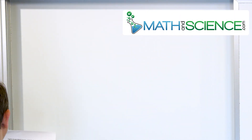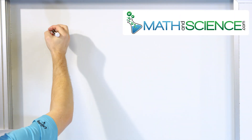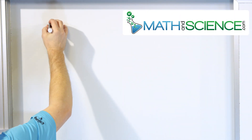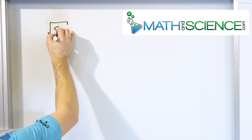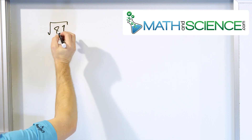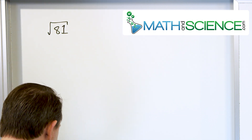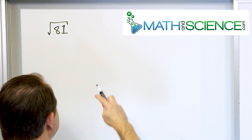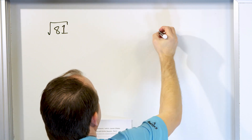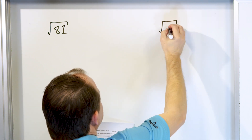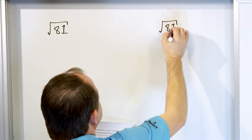Let's jump into our first problem. Let's take the square root of 81. We actually know the answer because of our multiplication tables, but let's just go through the motions.